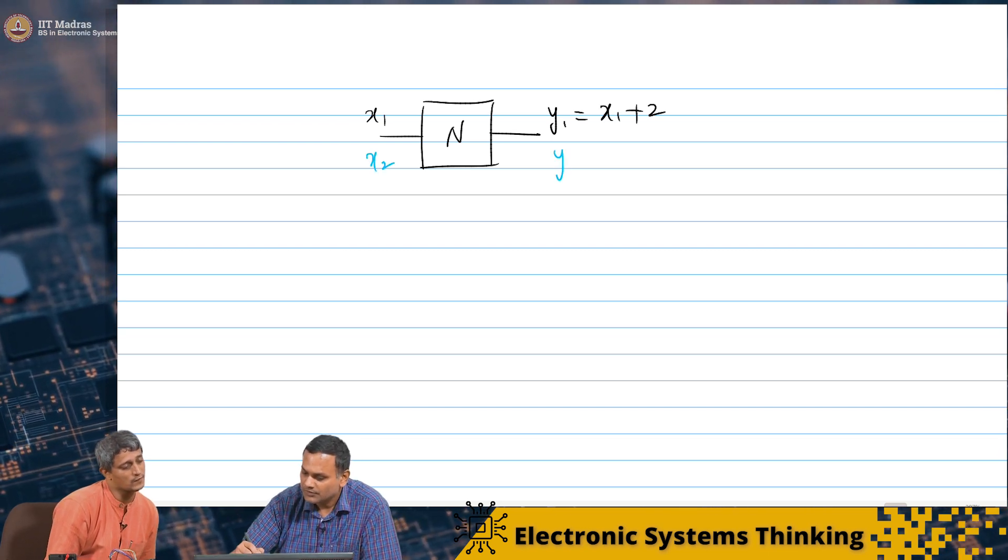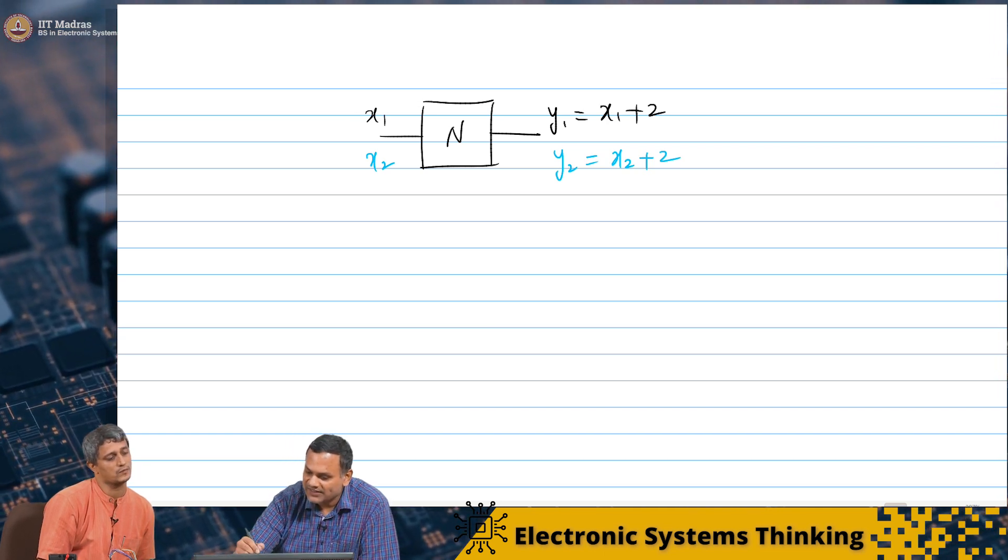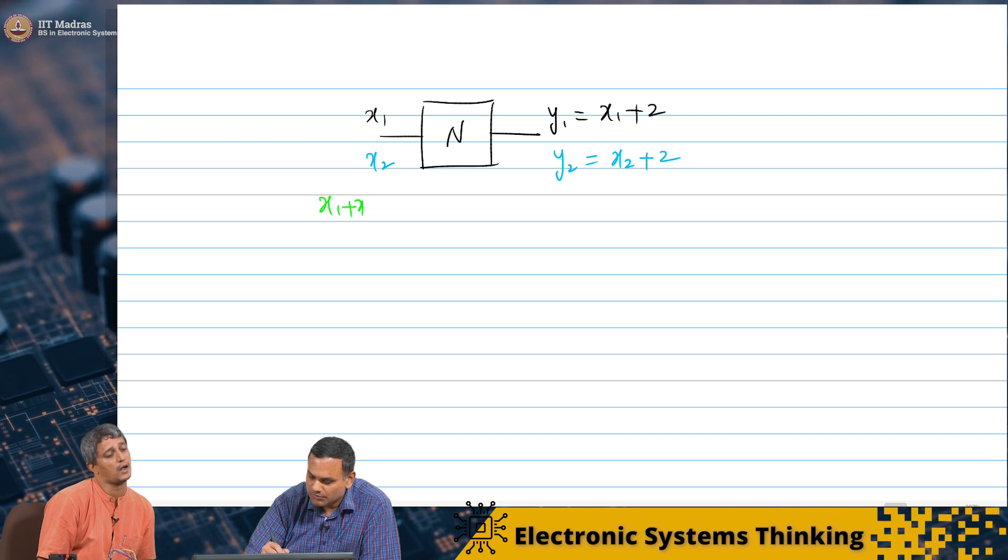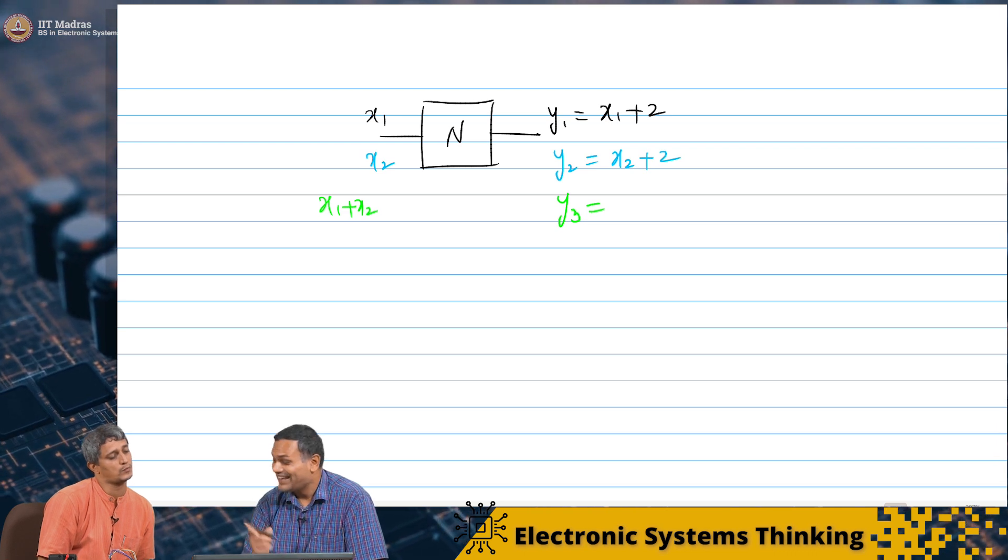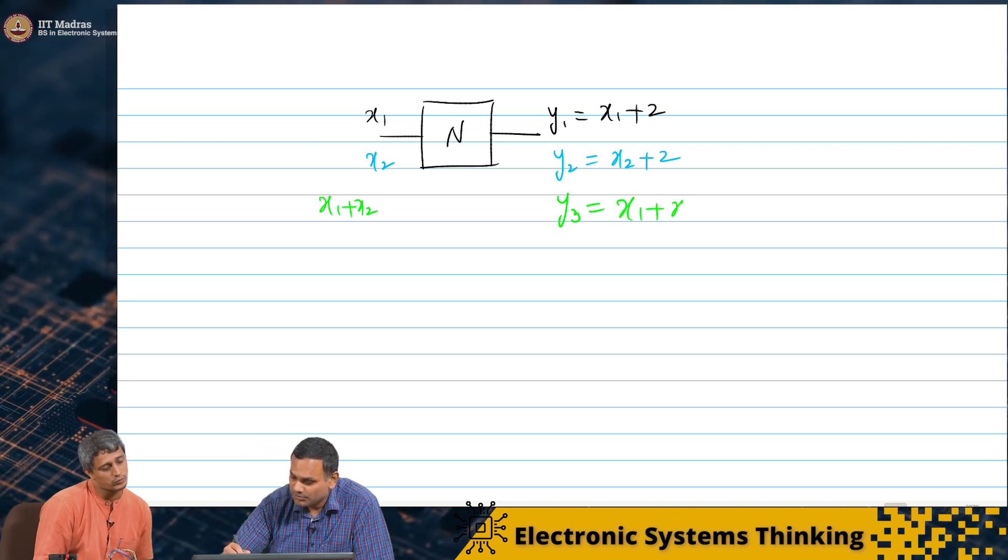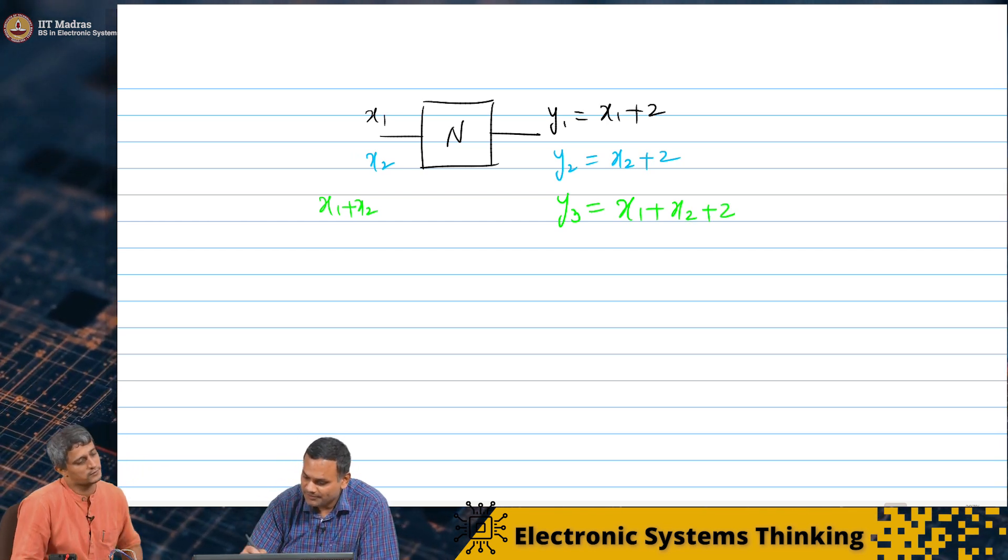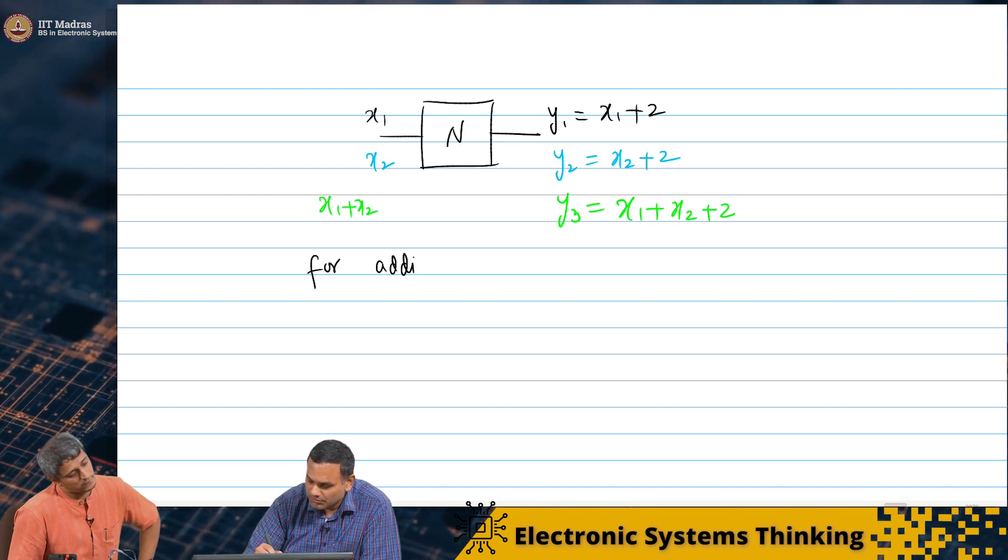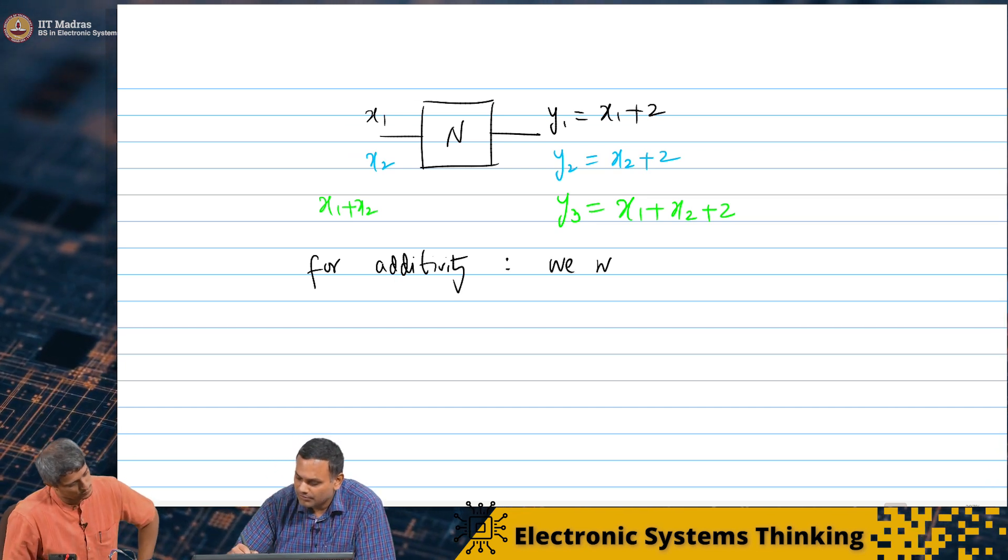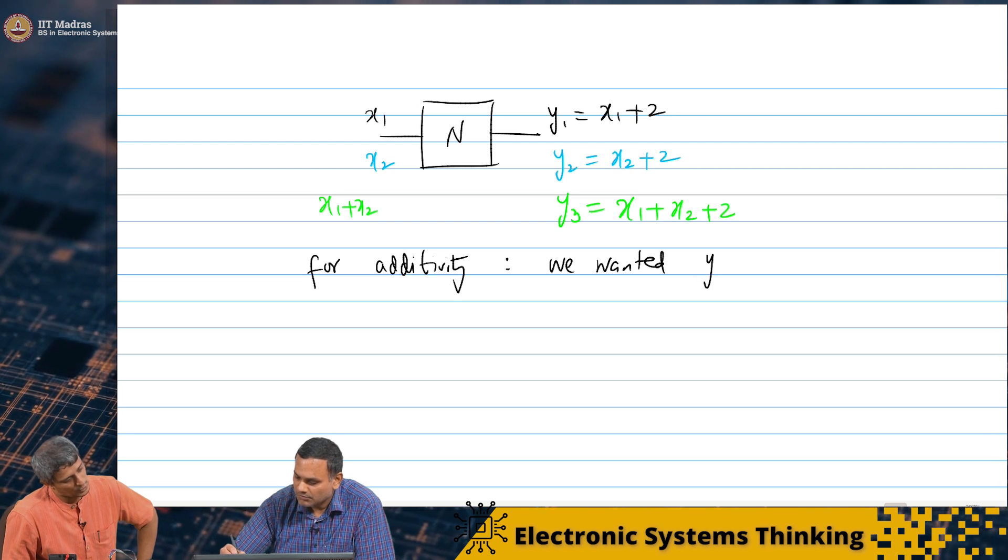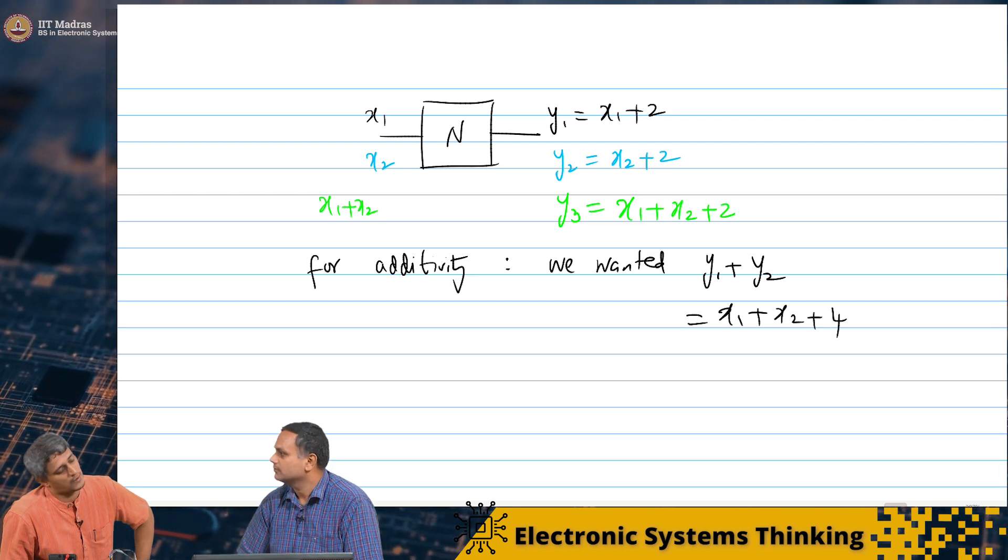So I give x1, I get y1 is x1 plus 2. And well, I do not need to redraw it. I will just draw it in a different color. x2, y2 is x2 plus 2. Now if I gave x1 plus x2, y3 I get is x1 plus x2 plus 2. What I wanted for additivity. You wanted y1 plus y2. We want y1 plus y2 which is basically x1 plus x2 plus 4.